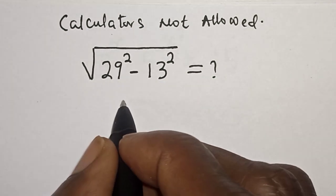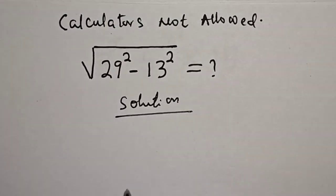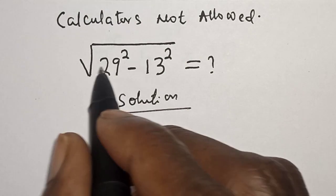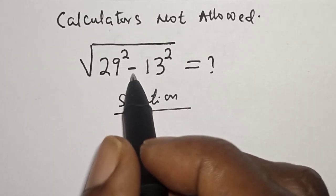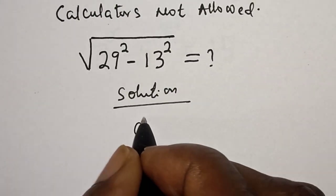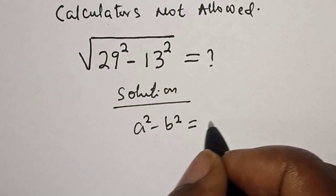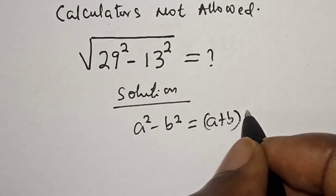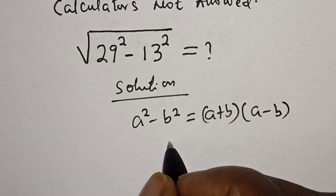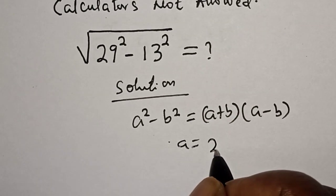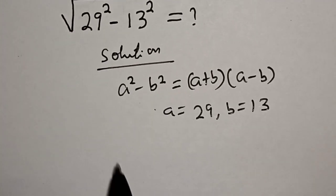Solution: We have square root of 29 squared minus 13 squared. This 29 squared minus 13 squared is in the form of a squared minus b squared. This is equal to a plus b multiplied by a minus b, where a is equal to 29 and b is equal to 13.